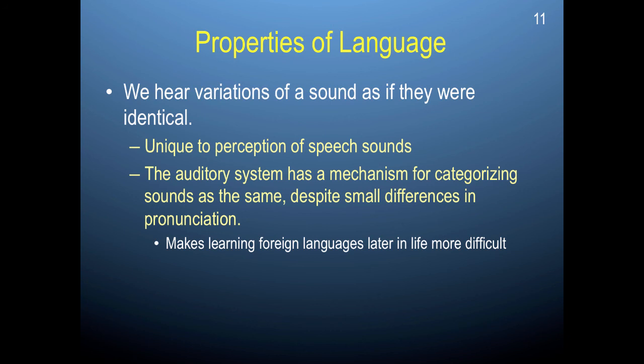This represents something quite masterful in terms of what our brain is able to do, because the sensation element — remember, sensation is objective and perception is subjective — the objective sensation of sound would be quite variable, and yet the perceived elements of sound are the same. Our brain is responsible for taking slightly different objective sensations and perceiving them as the same.